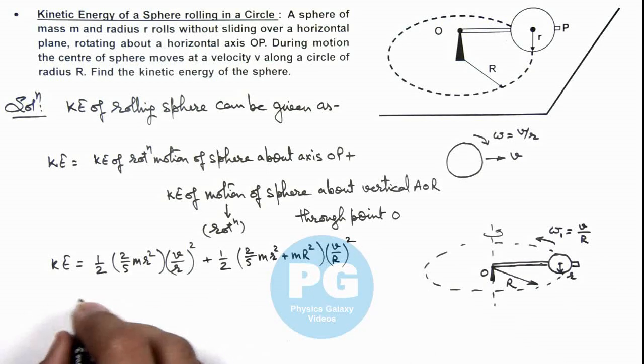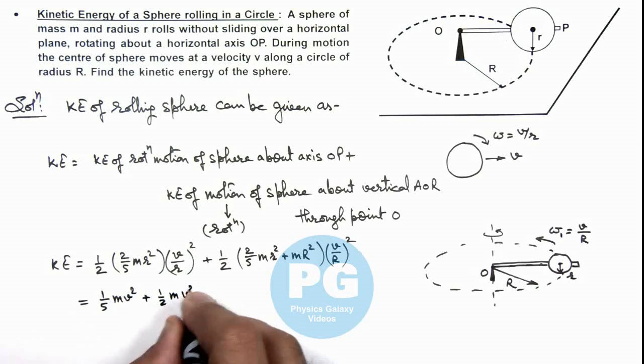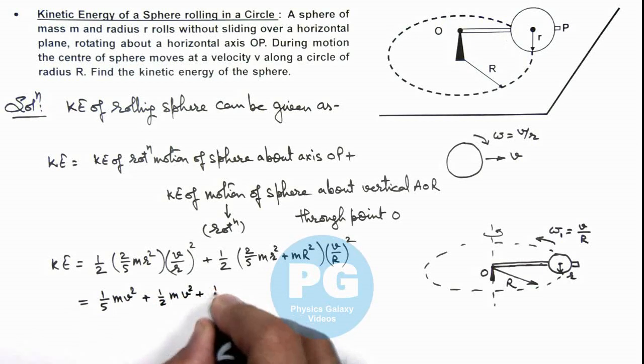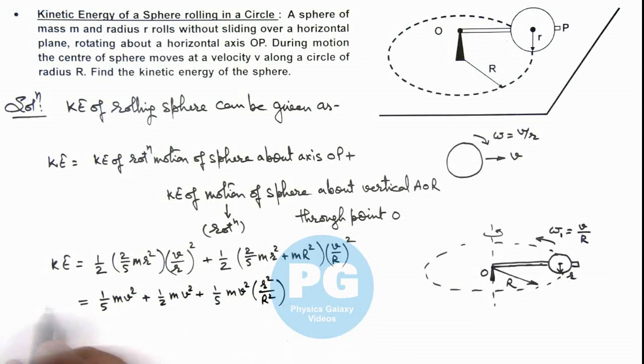If we simplify the terms here, this will give us 1 by 5 m v square plus half m v square plus 1 by 5 m v square multiplied by r square by capital R square. So the result on simplifying this expression will be 7 by 10 m v square multiplied by 1 plus 2 by 7 r square by capital R square. That is the result of this problem.